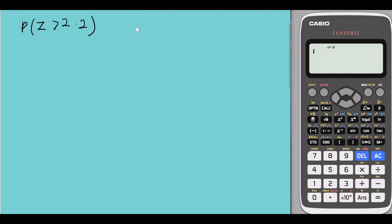So let's use the Casio ClassWiz to calculate the probabilities of your standard normal distribution. Let's say I want to find the probability that Z is greater than 2.2.